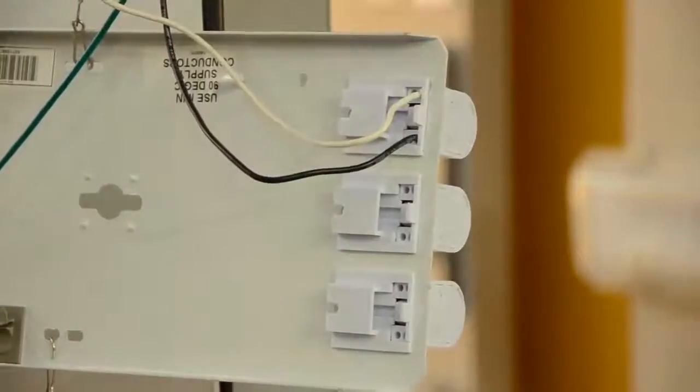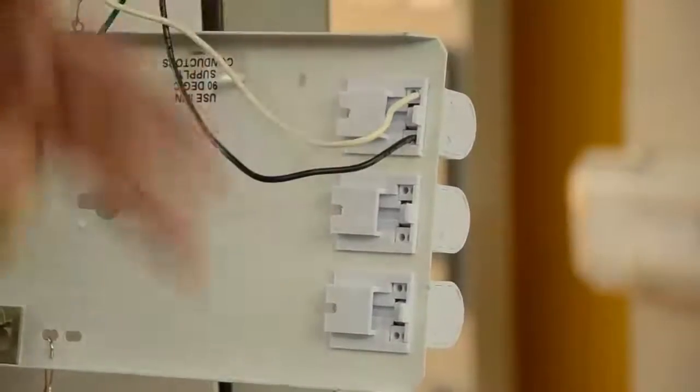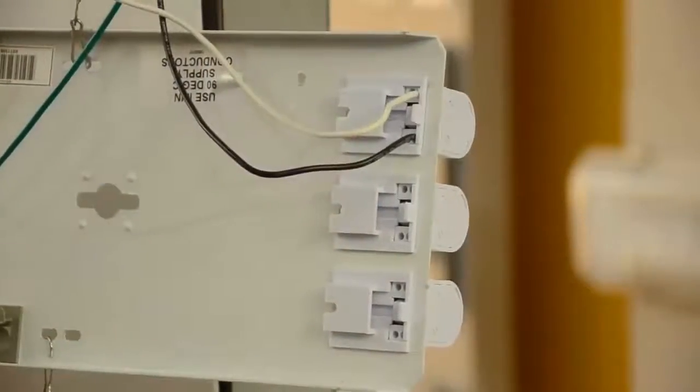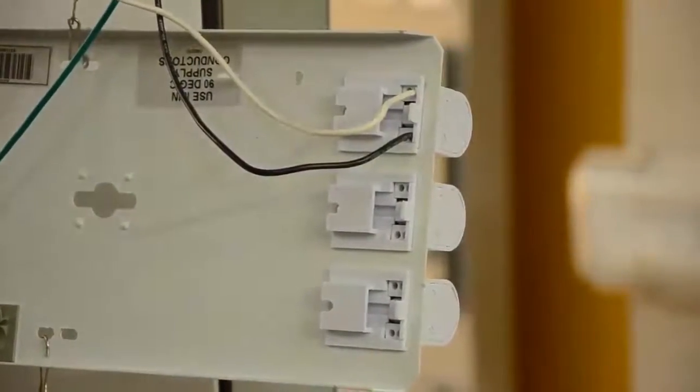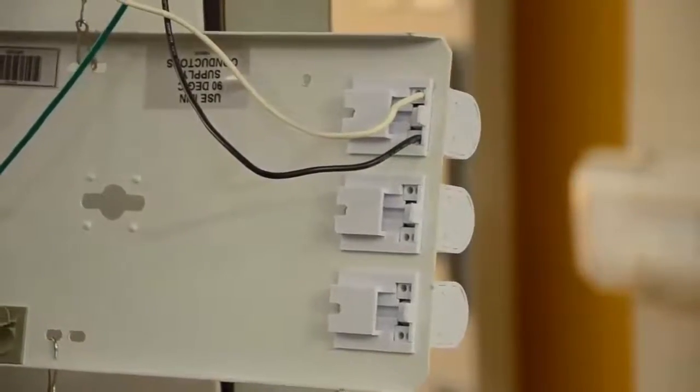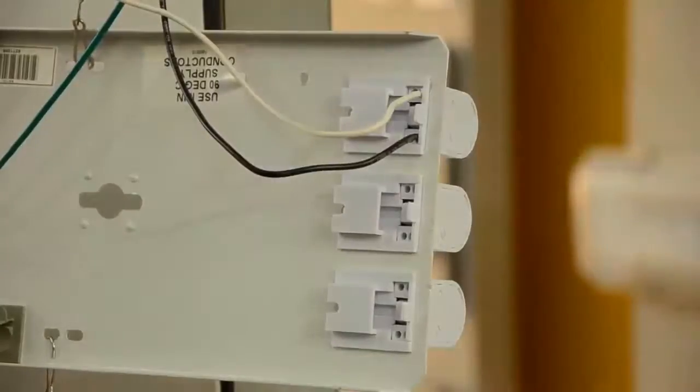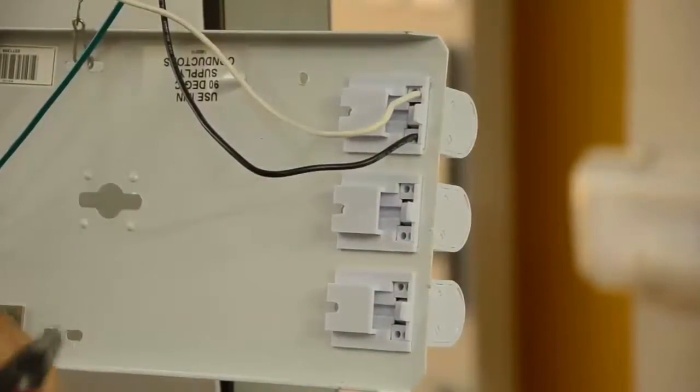I now have one socket ready to light up a lamp. Now I've got to jump my power from the first socket to the second and from the second to the third. I'm simply going to use wires left over from the fluorescent wiring.